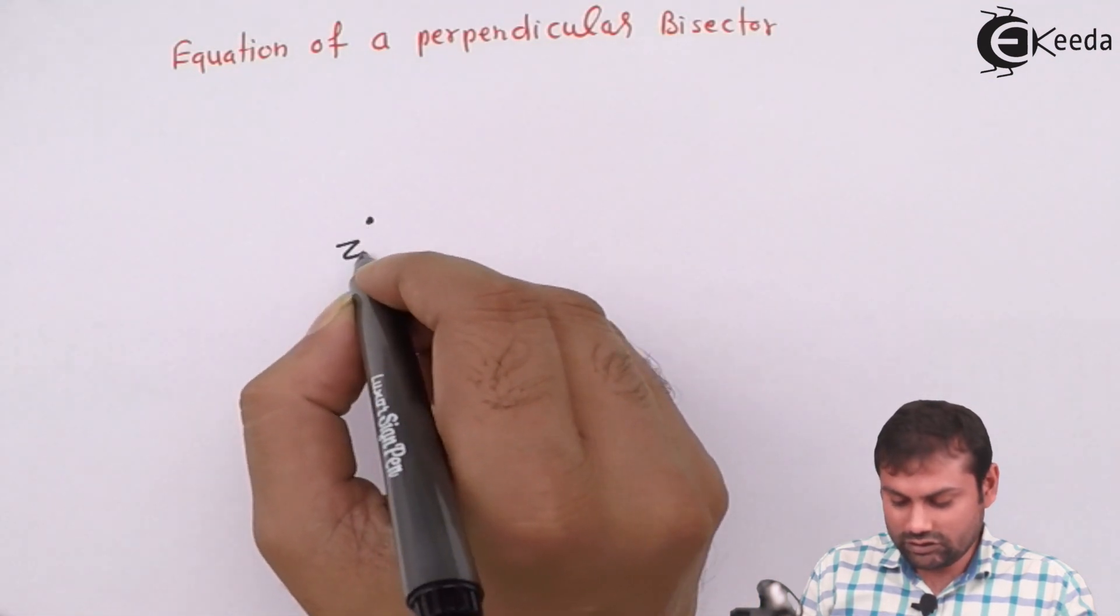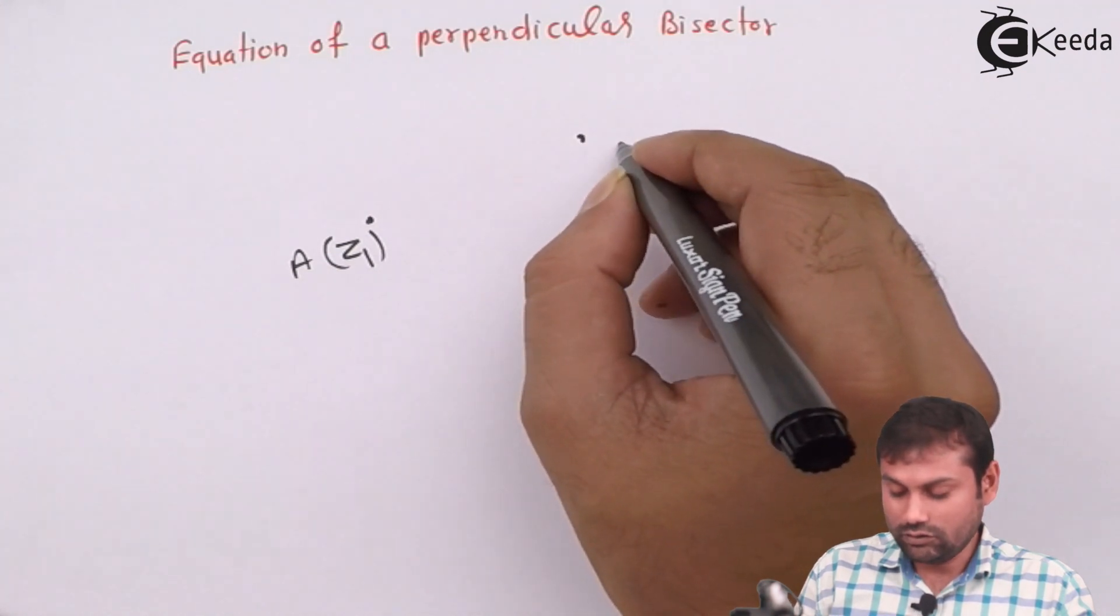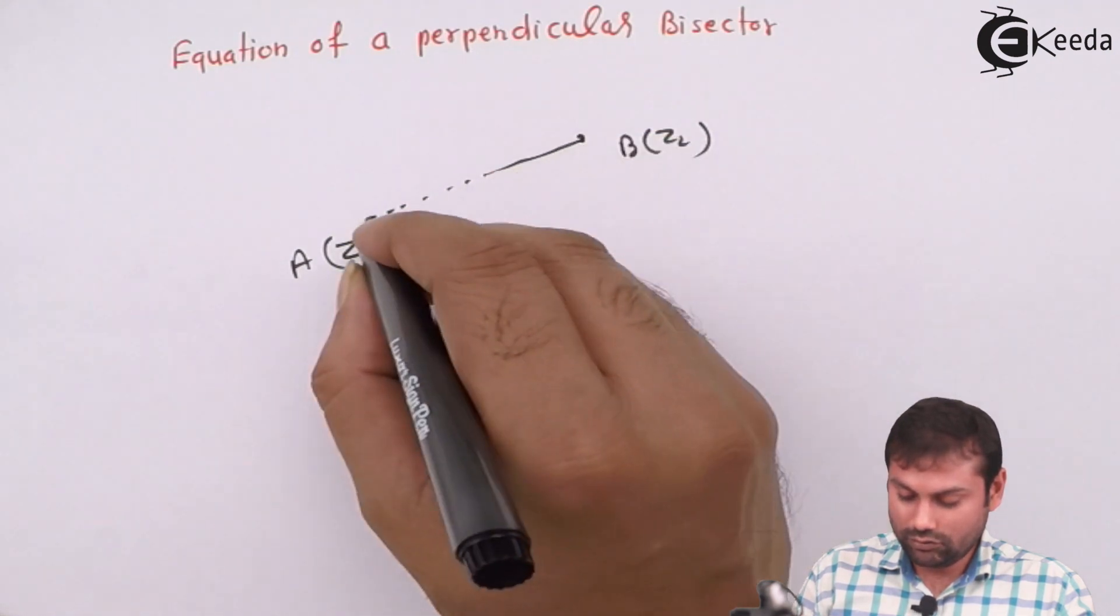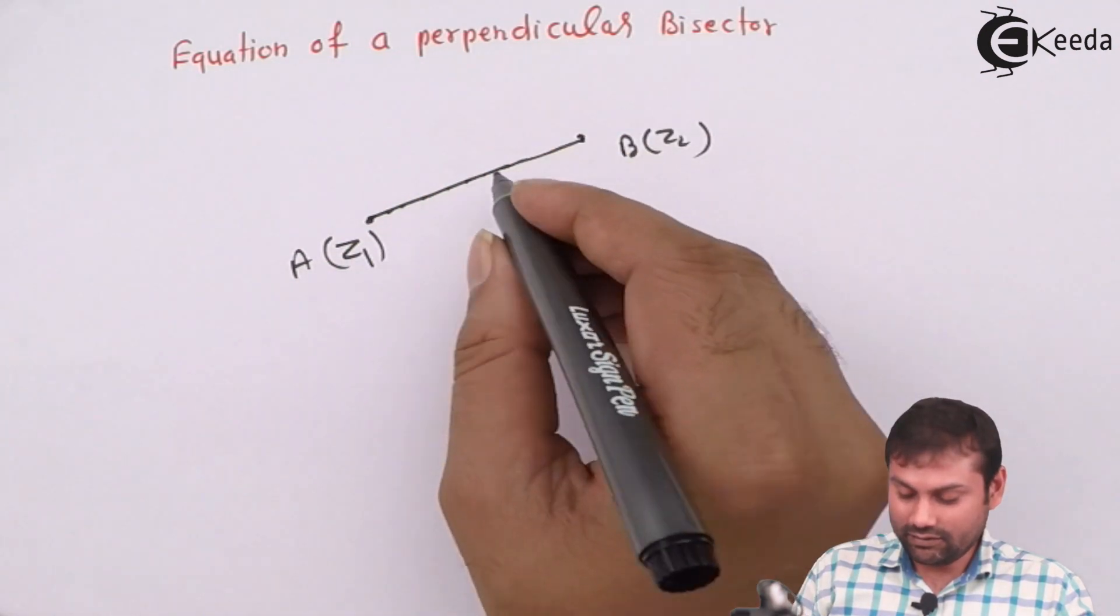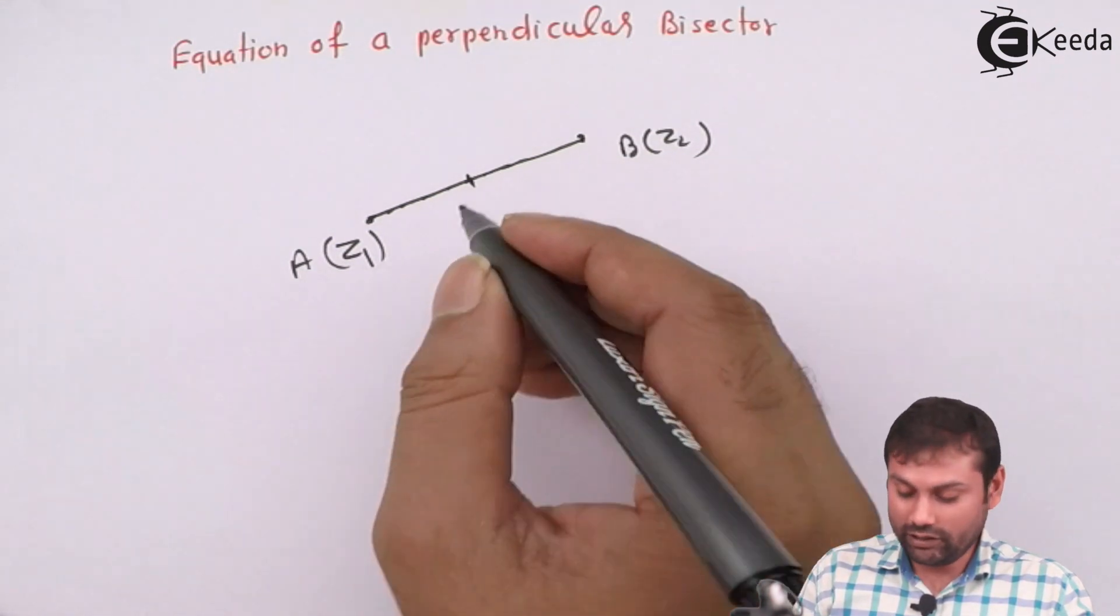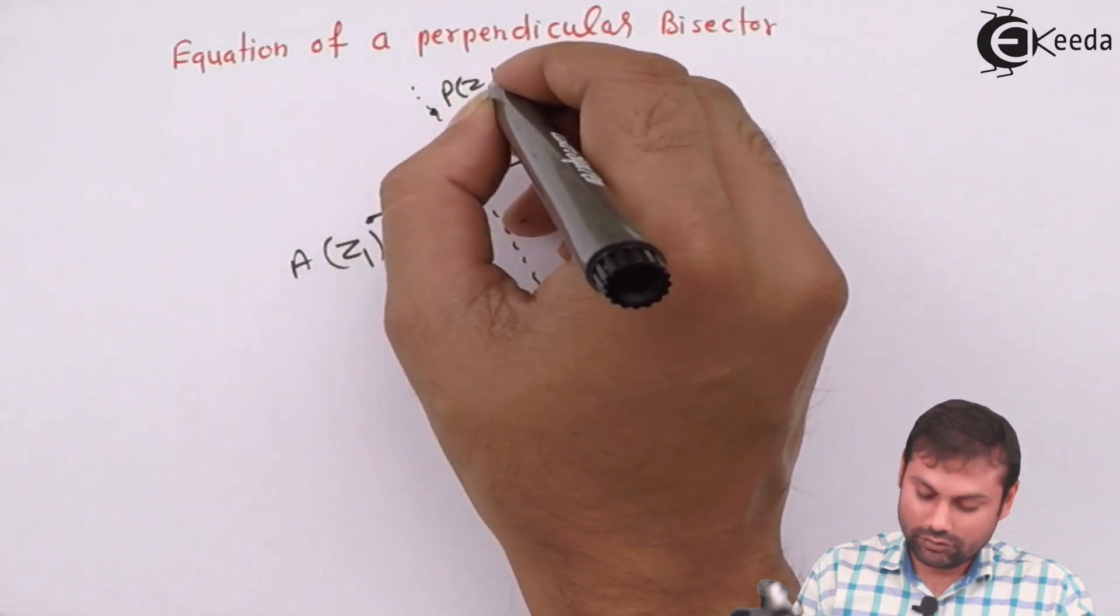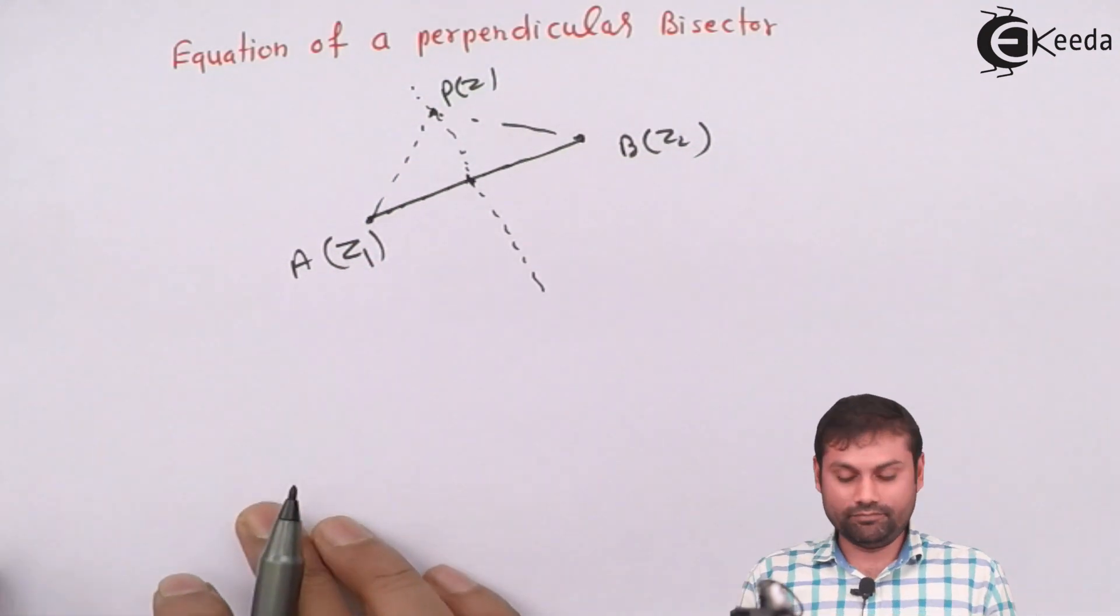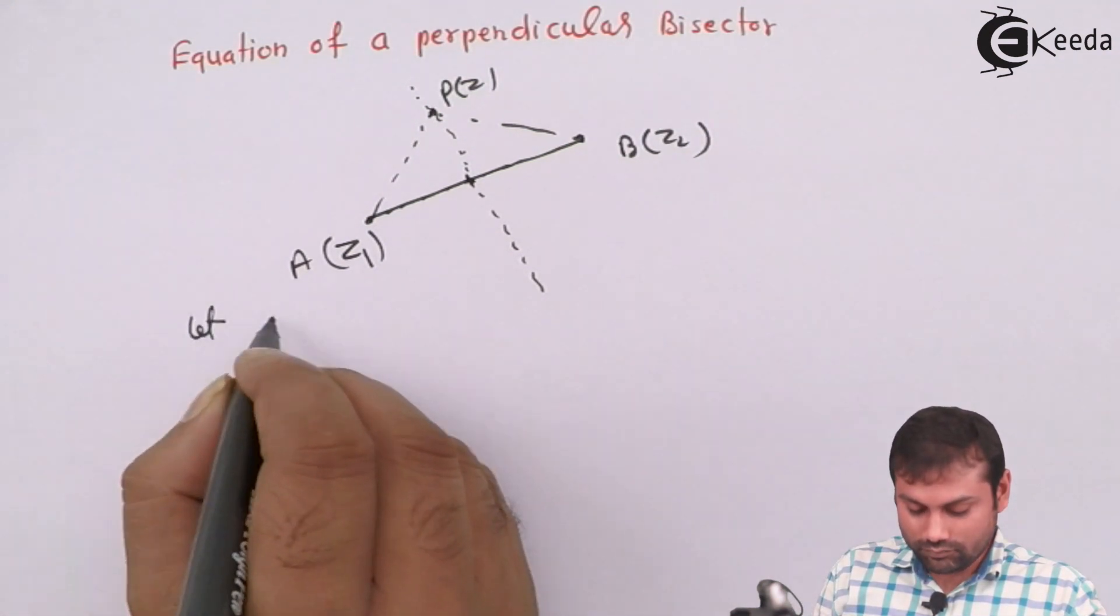So suppose this is Z1, A point, this is B Z2 point. So line joining these two points is this. So definitely bisector, perpendicular bisector passing, will pass through the midpoint and that would be perpendicular to this line. So that would be PZ.